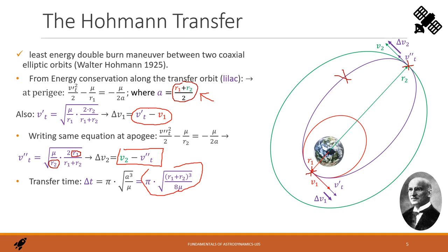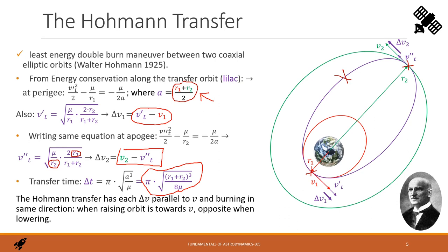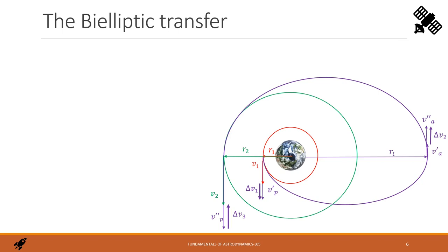The Hohmann transfer is the least energy demanding dual-burn maneuver, but it is also the longest one. Notice that when raising orbit, delta V has the same direction as V transfer, as in our example, but if lowering orbit, it will have the opposite direction.